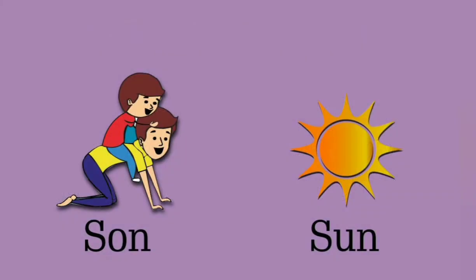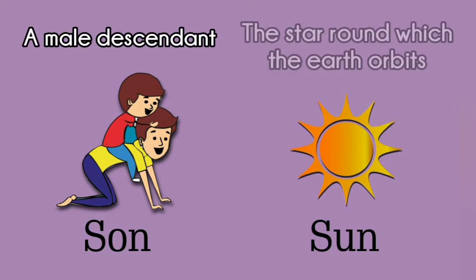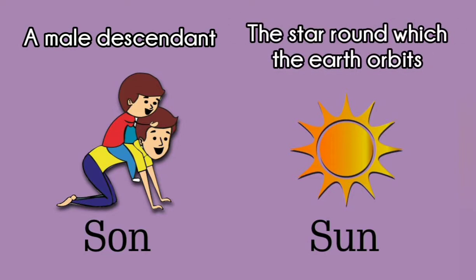For example, son and sun. S-O-N, which means a male descendant, and S-U-N, which means the star round which the Earth orbits.